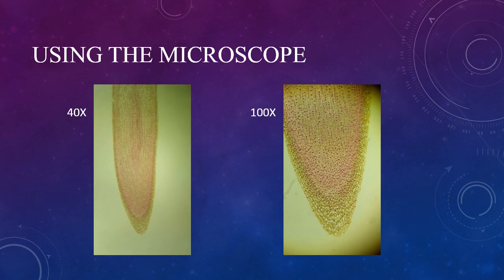But you might find a microscope fitted with a 20x ocular lens. If that were the case, using a 4x objective would give you an 80x total magnification. A 10x objective would give you a 200x total magnification, and so on.